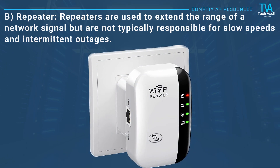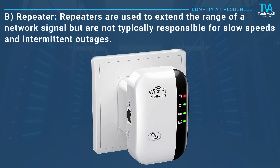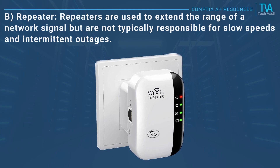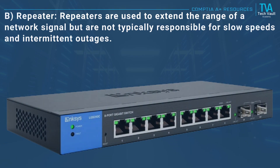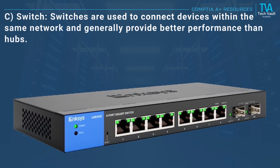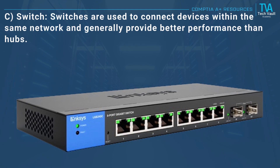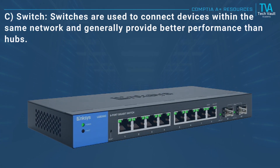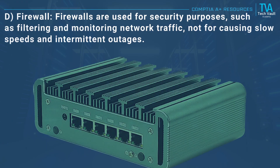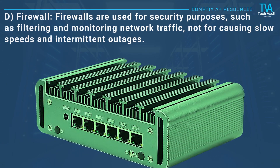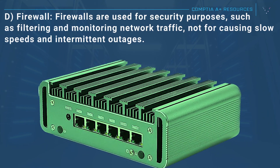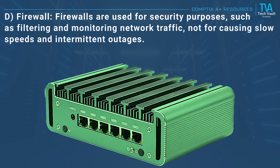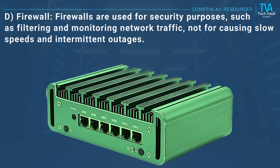B, repeater: repeaters are used to extend the range of a network signal but are not typically responsible for slow speeds and intermittent outages. C, switch: switches are used to connect devices within the same network and generally provide better performance than hubs. D, firewall: firewalls are used for security purposes such as filtering and monitoring network traffic, not for causing slow speeds and intermittent outages.